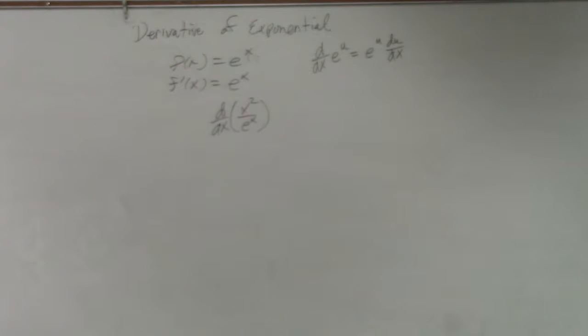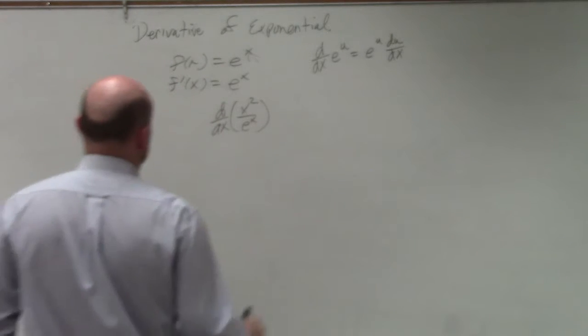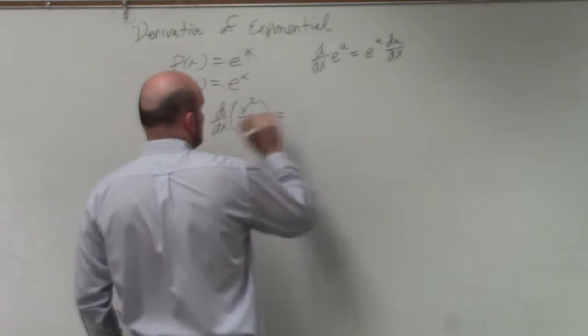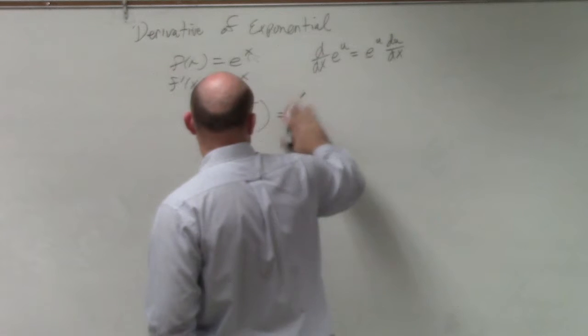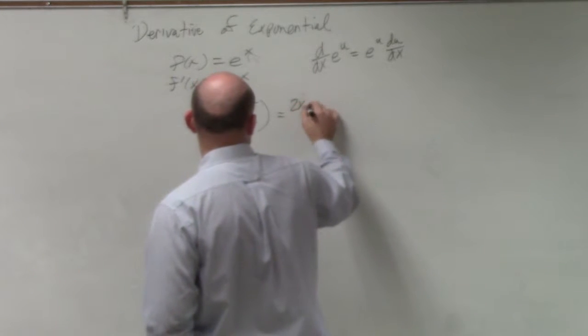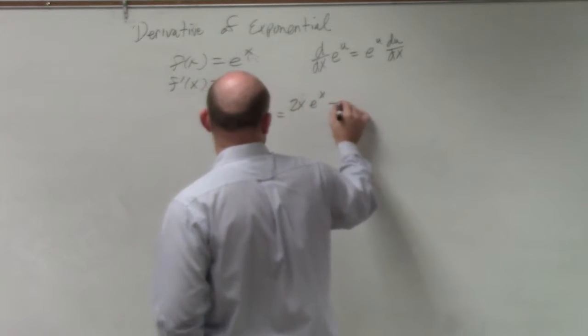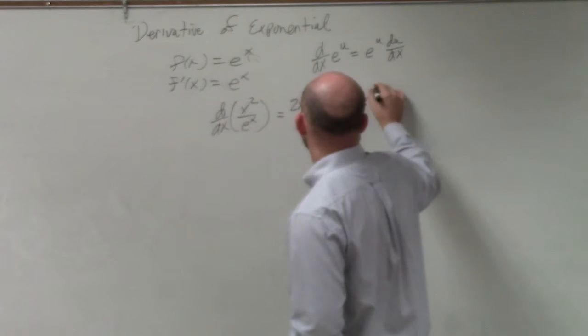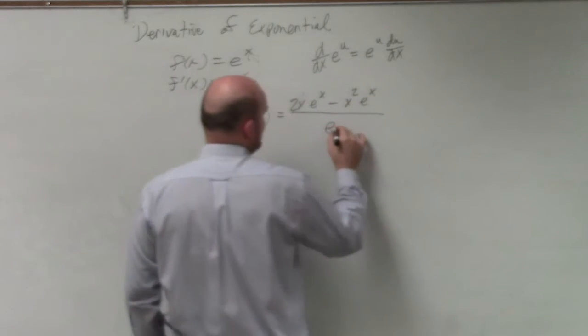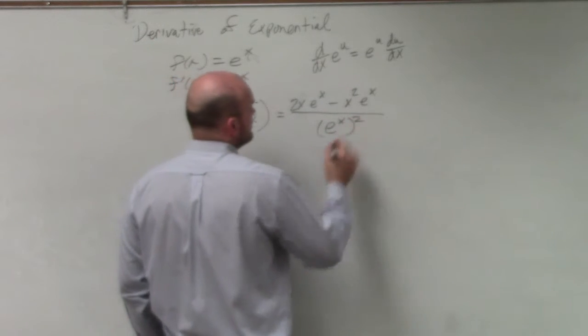Which again, this is just going to, again, some very simple practice. We can basically take 2 to the x times e to the x, and then minus x squared times e to the x, all over e to the x squared.